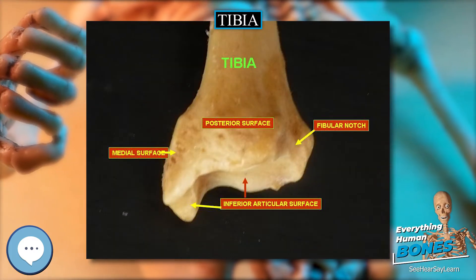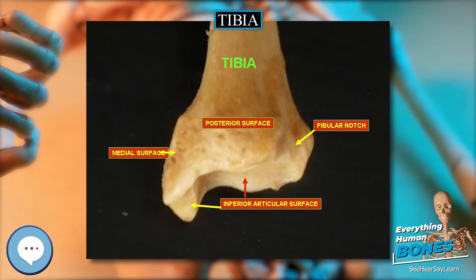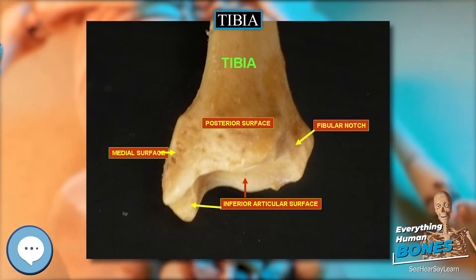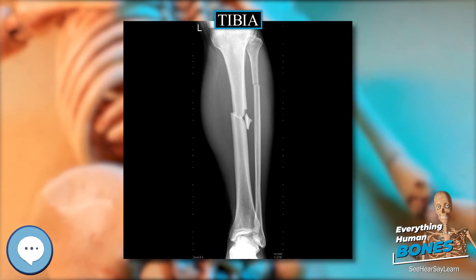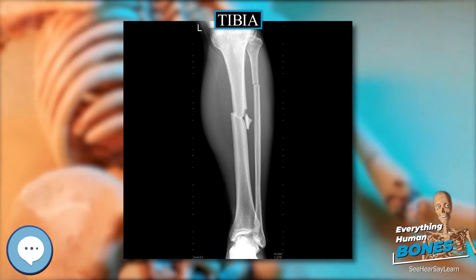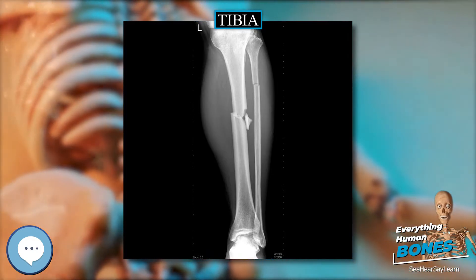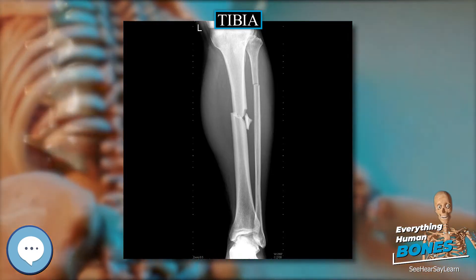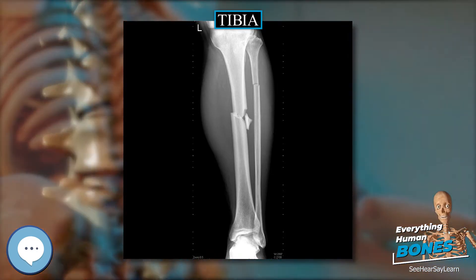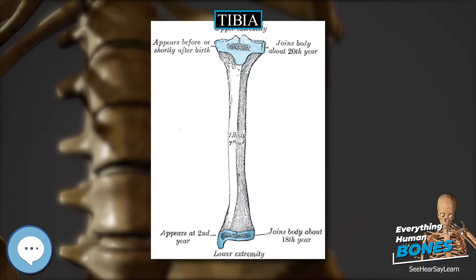The tibia is named for the flute tibia. It is the second largest bone in the human body next to the femur. The leg bones are the strongest long bones as they support the rest of the body.